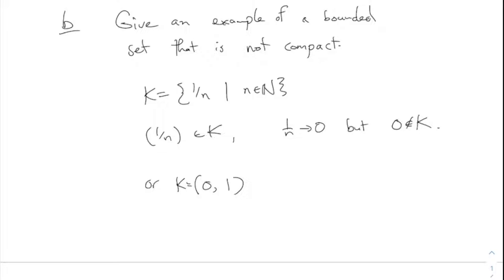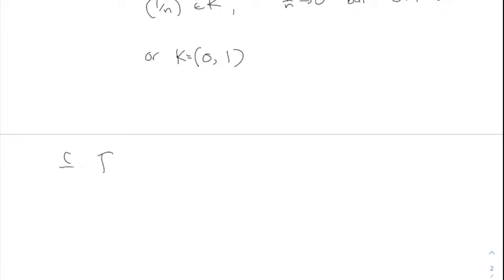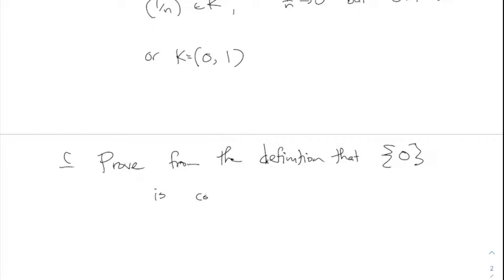Part C. Prove from the definition of compactness that the set {0} is compact. What we have to prove is: given any sequence in that set, it has a convergent subsequence and the limit of that subsequence is also in the set.